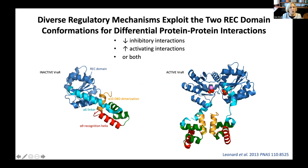In contrast, another NtrC family member uses a positive regulatory mechanism where the receiver domain upon phosphorylation is involved in a positive interaction with a neighboring ATPase domain to drive oligomerization and open complex formation. Some proteins use a combination of both inhibitory and activating interactions. In inactive VraR, which is a Staph aureus protein involved in vancomycin resistance, the receiver domain forms a tight interface with the DNA binding domain. In active VraR, a long linker helix unwinds somewhat, freeing the receiver domains to dimerize and exposing helix alpha-10 of the DNA binding domain, which mediates dimerization of the DNA binding domains in an orientation compatible with the recognition helices to recognize their DNA binding sites. This combination of both inhibitory and activating mechanisms produces a strong barrier between the off and on states — the dimerization affinities for inactive and active VraR differ by more than 10,000-fold.